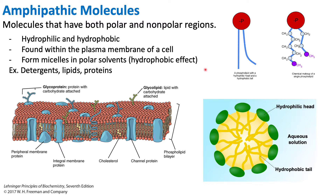One of the most common examples of amphipathic molecules is a phospholipid. A phospholipid consists of a phosphate head group and a fatty acid tail. The fatty acid tail is a hydrocarbon tail, made up of carbons and hydrogens.